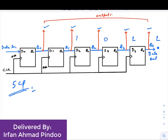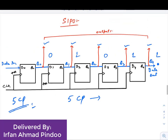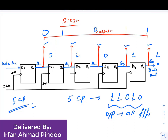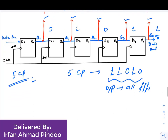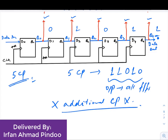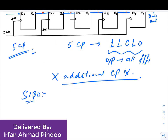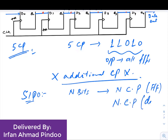Once your five clock pulses are over and suppose your data was the same 1 1 0 1 0, can you get all the data in the form of 1 1 0 1 0? The answer is yes. At the end of the fifth clock pulse you will have all the data available at the output, because we are taking output from all the flip-flops — we are not dependent only on Q4. So there are no additional clock pulses required here. In a SIPO shift register, if you have n bits of data you need n clock pulses to store the data and only n clock pulses to get the data at the output.